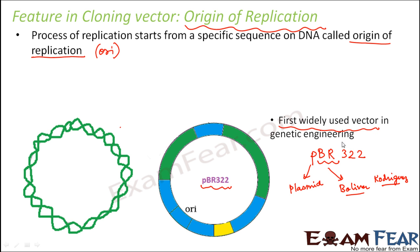If you look at the origin of replication in PBR322, you can see this is where the ORI is located — the sequence of DNA from where the process of replication will start. If we want many copies or multiple copies of the target DNA, the foreign piece of DNA has to be linked to this sequence. Because this is the place where replication starts, if the foreign DNA is linked in this region, it will also multiply.